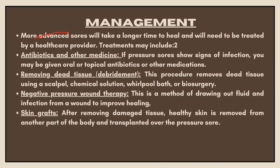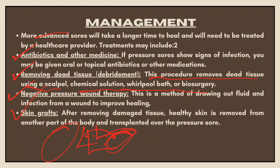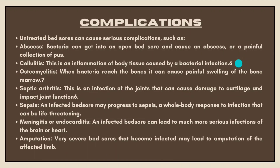For more advanced sores, treatment includes removing dead tissue — debridement using a scalpel, chemical solution, whirlpool bath, or biosurgery — as well as antibiotics. Negative pressure wound therapy is a method of drawing out fluid and infection from the wound to improve healing. Skin grafts involve removing healthy skin from another part of the body and transferring it over the pressure sore.